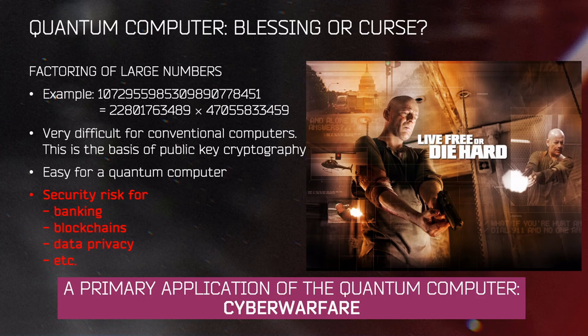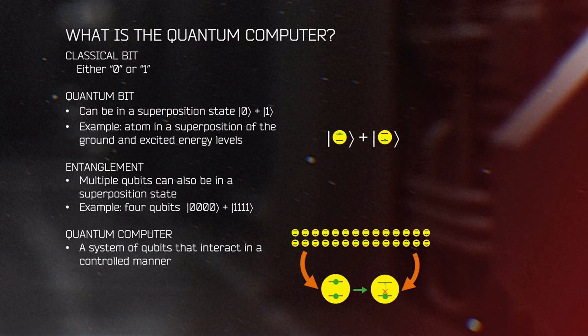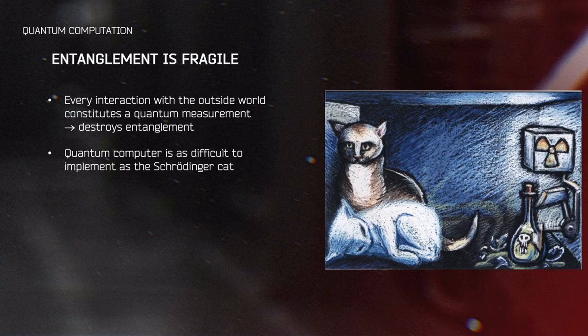The good news is that a quantum computer is quite difficult to build. Large entangled systems are very fragile — every interaction of any qubit with the outside world constitutes a quantum measurement, which would essentially destroy the entanglement, forcing a restart of the computation. We need to make sure our qubits are affected by other qubits, which are very small, and yet not affected by the environment, which is much larger. This is, in a sense, an oxymoron — a contradictory task — and that's why the computer is so difficult to build. It's as difficult to build as a Schrödinger's cat.